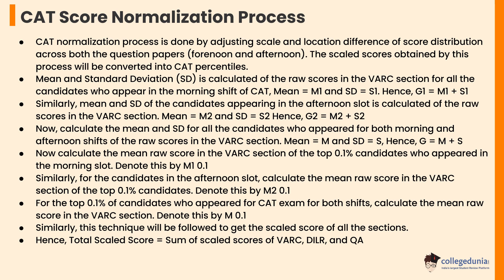Next, calculate the mean and standard deviation for all candidates who appear for both morning and afternoon shifts of the raw scores in the VARC section. Then calculate the mean raw score in the VARC section of the top 0.1% candidates who appear in the morning slot — denote this by M1(0.1). Similarly, for candidates in the afternoon slot, calculate the mean raw score of the top 0.1% candidates in the VARC section — denote this by M2(0.1). For the top 0.1% of candidates who appear for the CAT exam across both shifts, calculate the mean raw score in the VARC section and denote this by M(0.1).